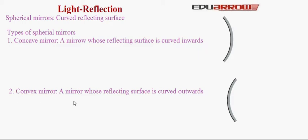A very good example of this kind of mirror is a spoon. It can behave both as a concave mirror and a convex mirror depending on the way we hold the spoon.